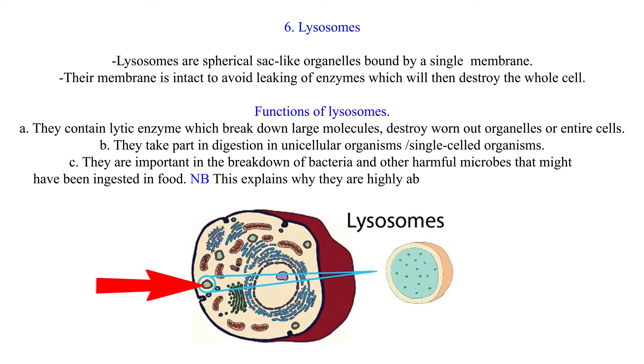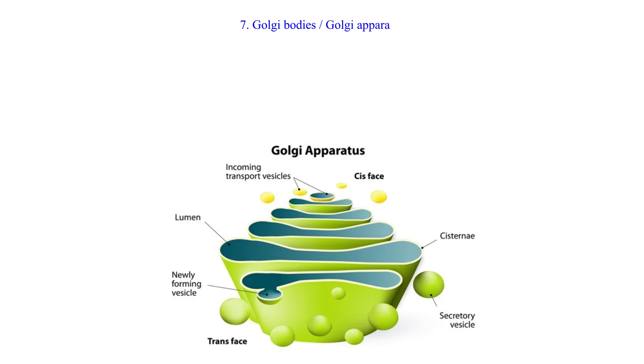N.B. This explains why they are highly abundant in injured or infected cells. They are abundant in cells that are active in secretion, for example, pancreatic cells which secrete enzymes.